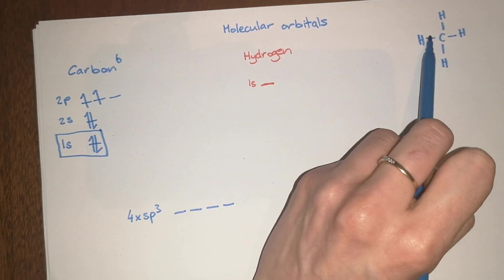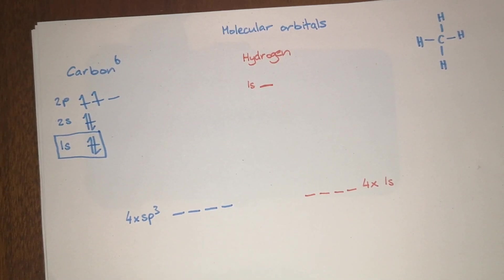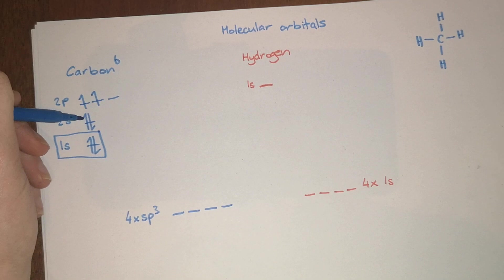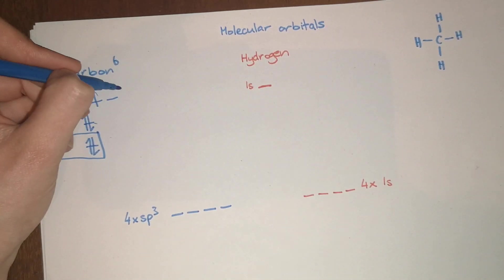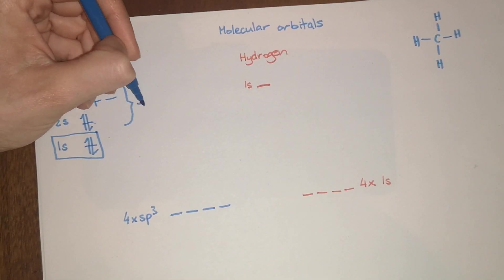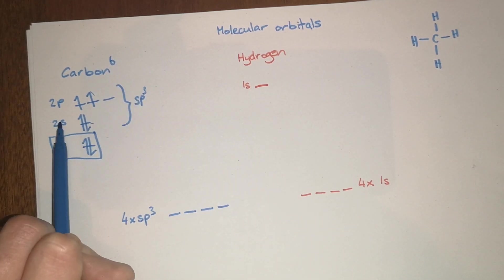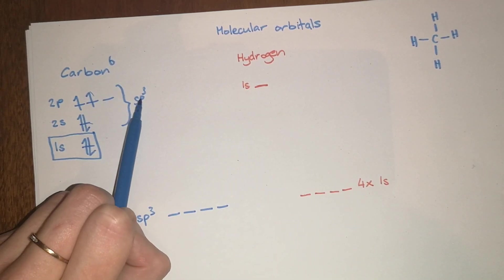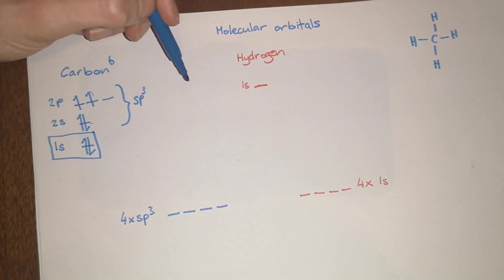When a carbon has four single bonds it needs to have four orbitals with a single electron in each. The way it does this is these will actually combine together to form sp3 orbitals. The s refers to the fact that there's one s orbital and the p3 refers to the fact that there's three p orbitals.